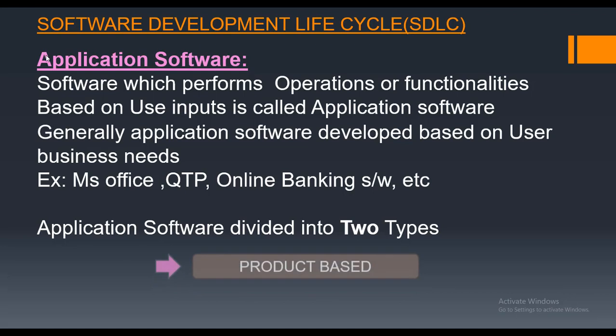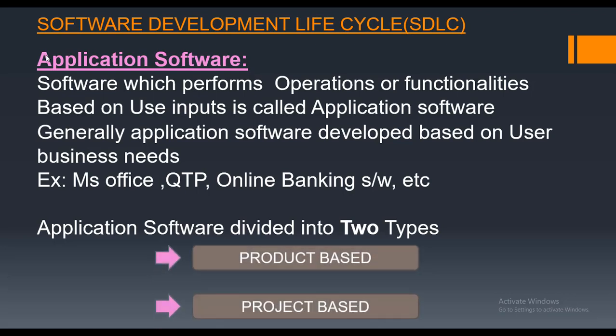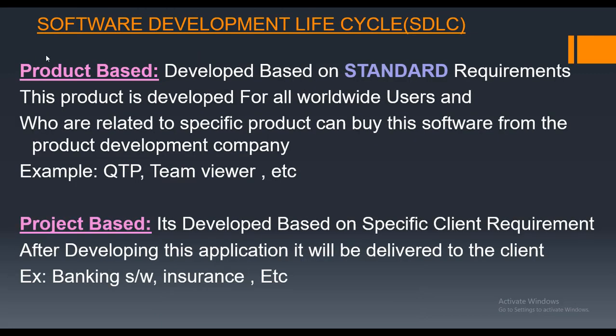Application software can be further categorized into product-based and project-based. Product-based software is developed for worldwide users, not for a specific user, depending on market standards. For example, Gmail and Yahoo Mail are product-based — they are developed based on market standards and released for worldwide users, either for free or paid.